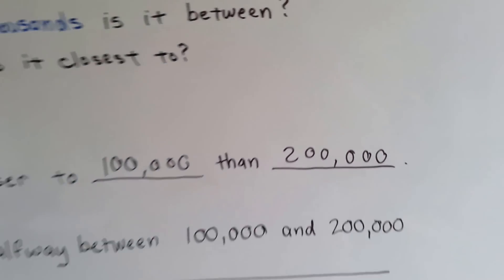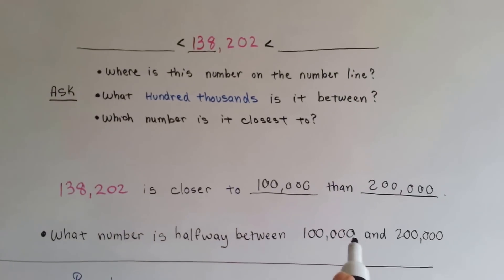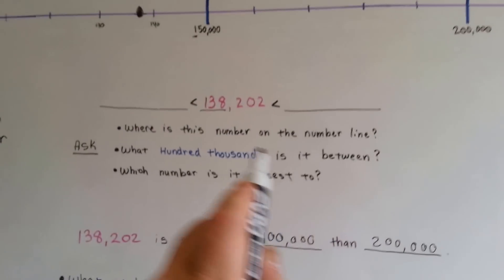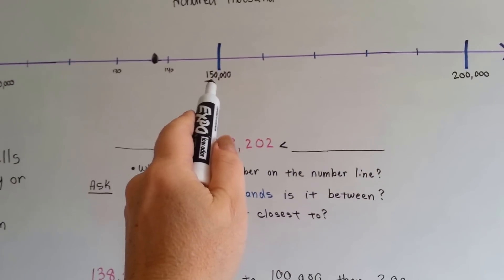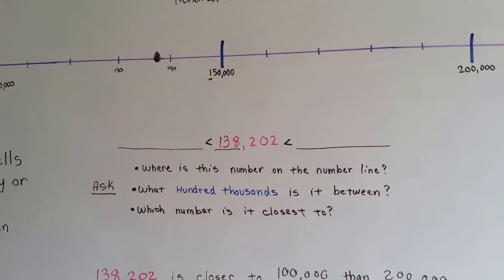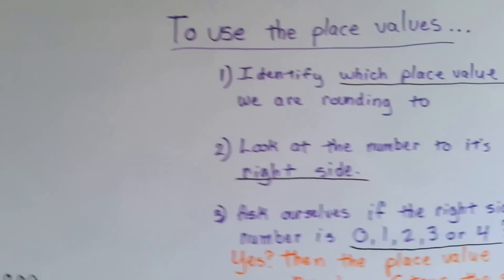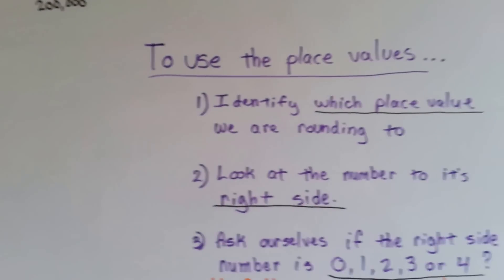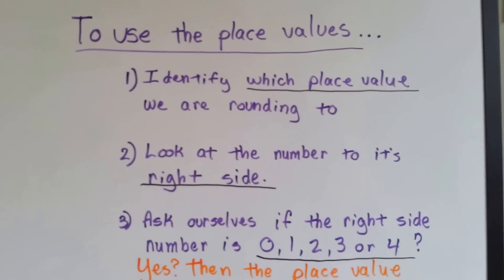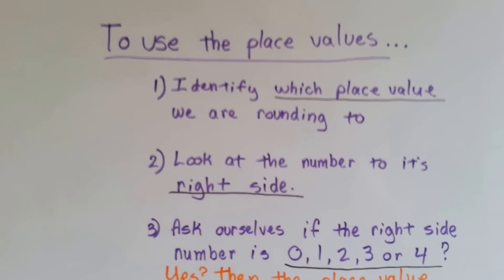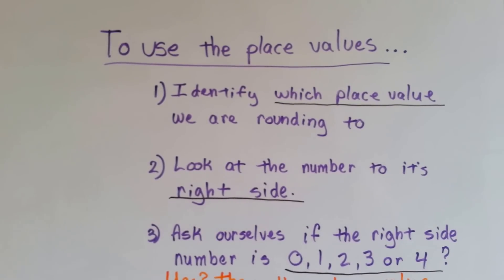What number is halfway between 100,000 and 200,000, right in the middle? 150,000. Now see that 5? That 5 is really important. It was great using the number line to help us round off, but the best way to do it is to use place values. To use the place values, this is what you need to do.